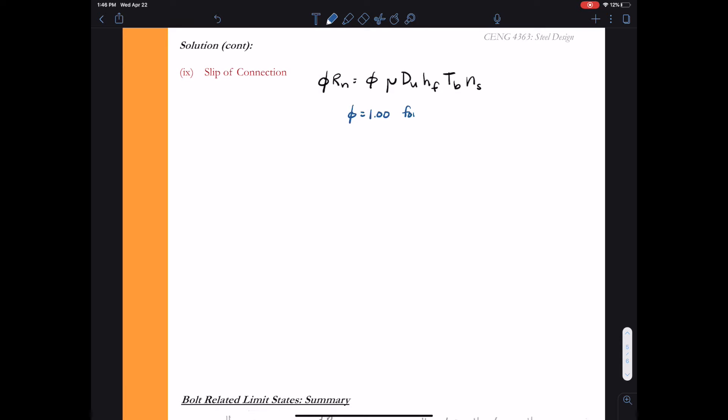In this connection, we have standard size holes. So φ will be 1.00. We were given that it was class A surfaces. So μ equals 0.30.